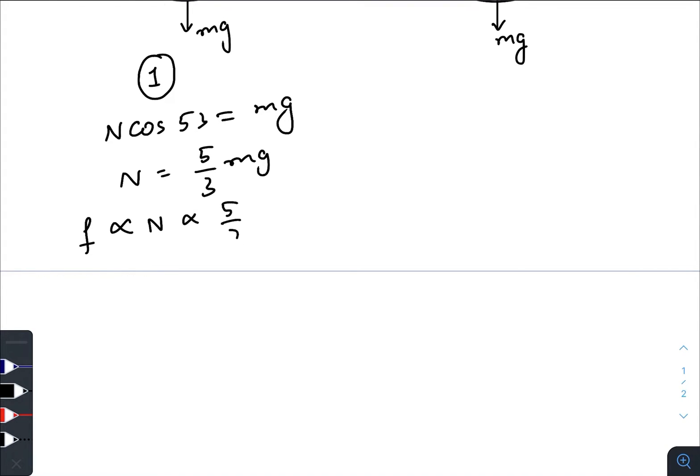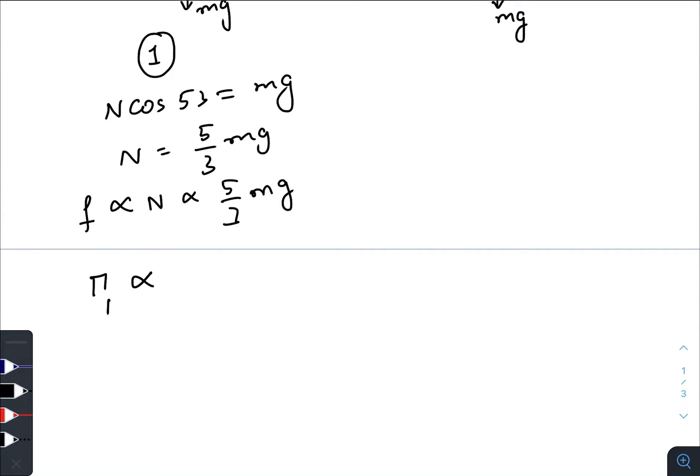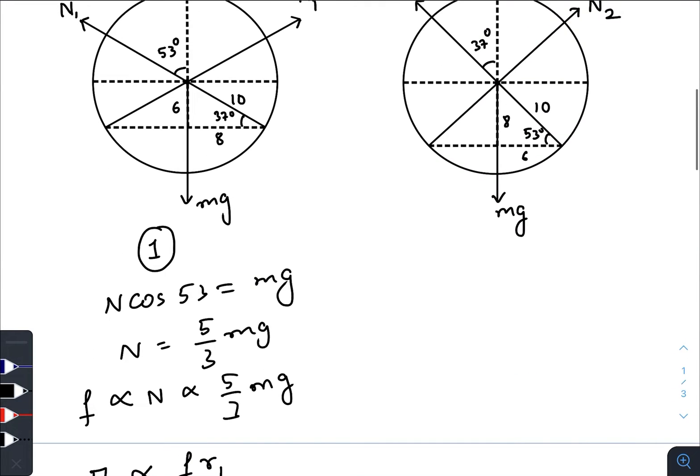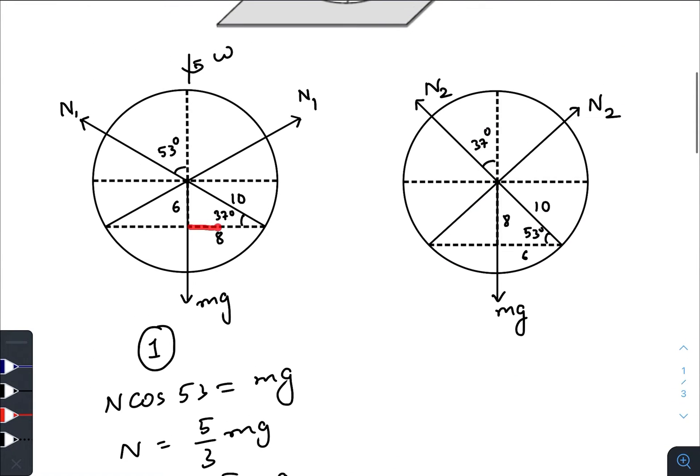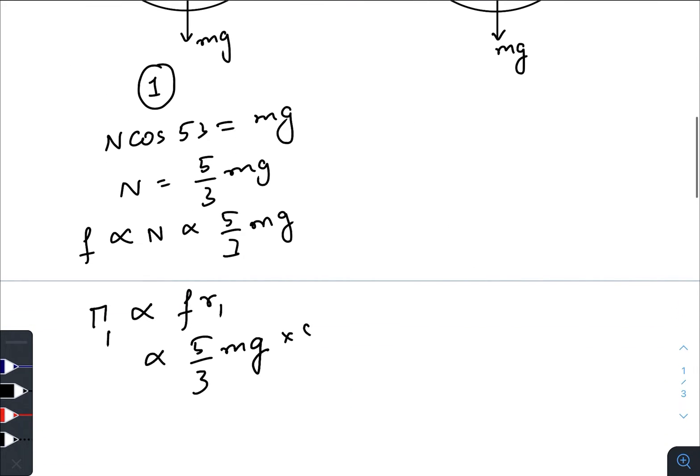It will be directly proportional to 5/3 mg. Hence the torque in the first case will be directly proportional to f times r1. So that would be 5/3 mg times what is the radius at which the torque will be applied - that is eight centimeter. So we will just multiply it with eight.